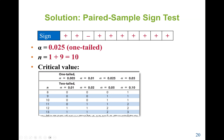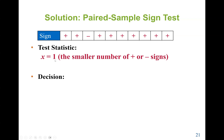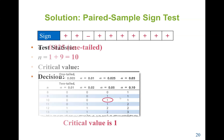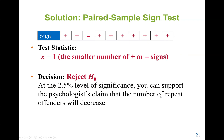We assign signs to the differences. We have 9 positives and 1 negative — for example, 40 > 21 (positive), 33 > 17 (positive), but 9 < 16 (negative). Sample size N = 9 + 1 = 10. Using table 8 with N = 10 and alpha = 0.025, the critical value is 1. The test statistic X = 1 (the smaller of positive or negative signs). Since X ≤ critical value, we reject H0. At the 2.5% level of significance, we support the psychologist's claim that the number of repeat offenders will decrease.